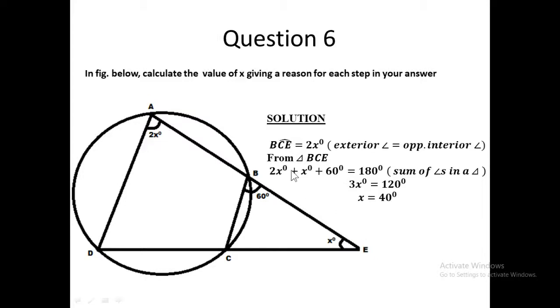So we are to solve this question to find x given this angle to be 2x degrees, this angle to be 60 degrees, and this angle to be x degrees. Now the solution of this one is very simple because you're having a cyclic quadrilateral here. This is one line, two line, three line, four. This is a cyclic quadrilateral and this angle here is an exterior angle.